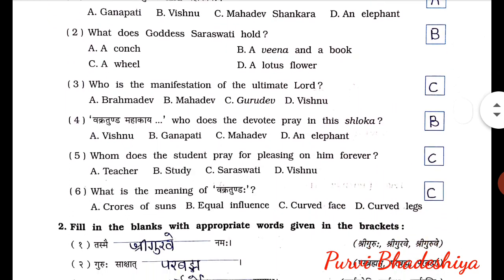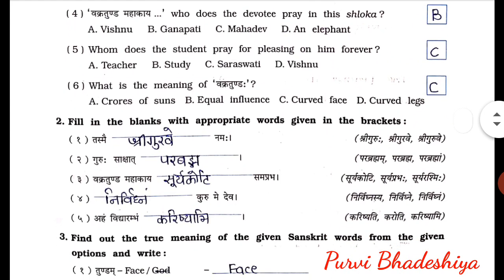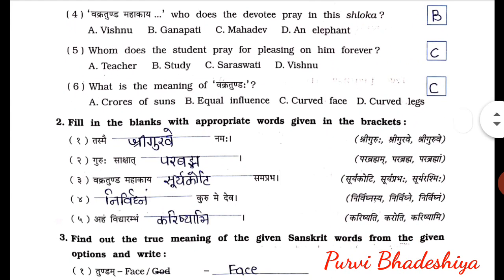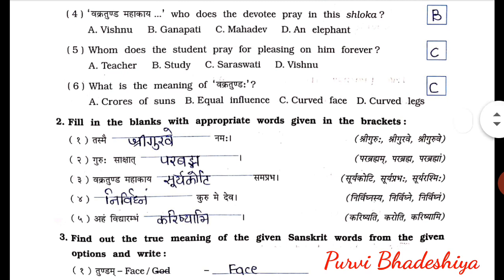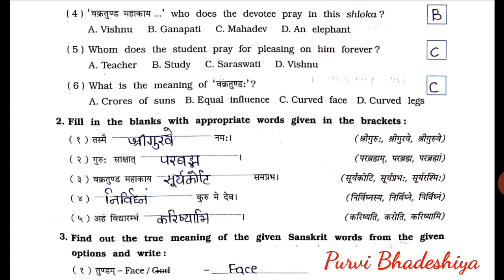Fourth number MCQ: in the sloka Vakratundah Mahakayah, whom does the devotee pray? The answer is B — Ganpati.